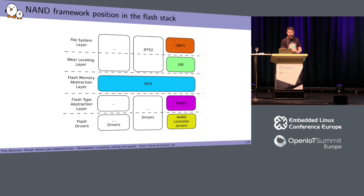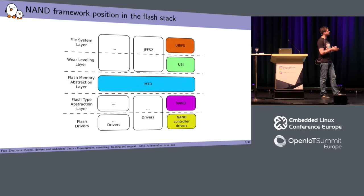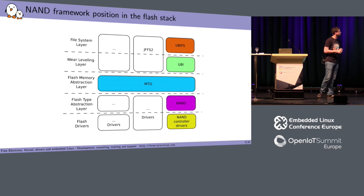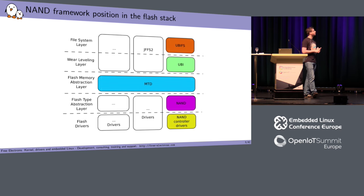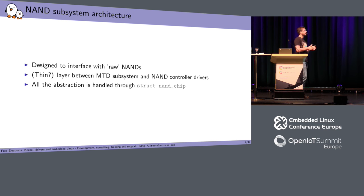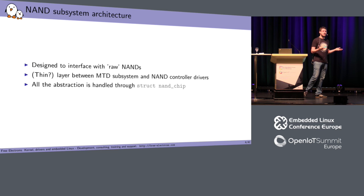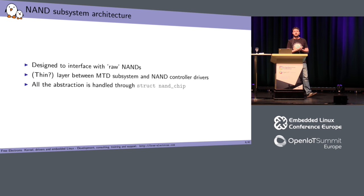Let's see where the NAND framework stands in the flash stack in Linux. In the middle you have MTD, which is abstracting all kinds of flash storage. Under this abstraction layer you have the NAND framework, which is a layer between the NAND controller drivers and the MTD layer. On top of the MTD layer you have all the MTD users, which includes file systems like JFFS2 or wear-leveling layers like UBI. Everything abstracted in the NAND subsystem is done through the NAND chip structure.